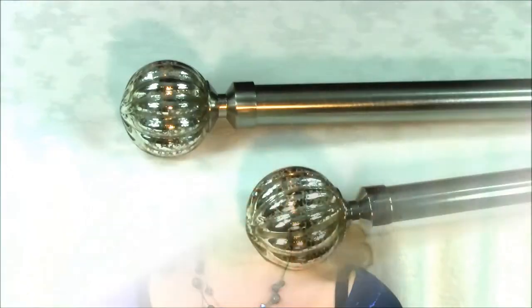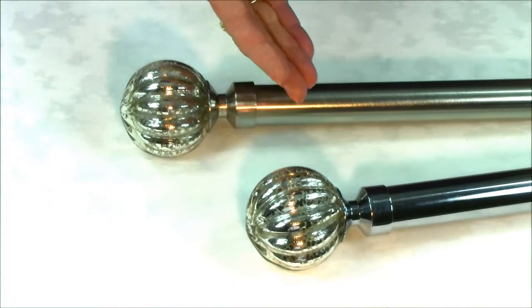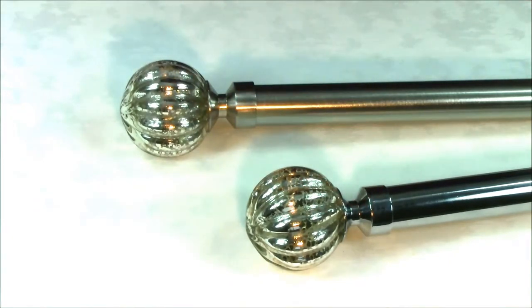Hi, I'm Angela from PolesandBlinds.com. This is the Speedy Dynasty 28mm eyelet metal curtain pole. It's available in satin silver and chrome, and is perfect if you want a 21st century look with more than its fair share of wow factor.